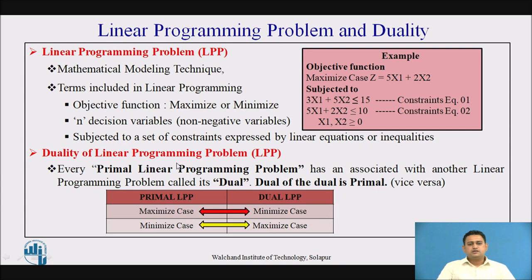What is duality of an LPP? Every primal linear programming problem has an associated linear programming problem called the dual. The dual of the dual is the primal. The table shows that if the primal LPP is a maximized case, the dual will be a minimized case. Similarly, if the primal is a minimized case, the dual will be a maximized case — it is vice versa.